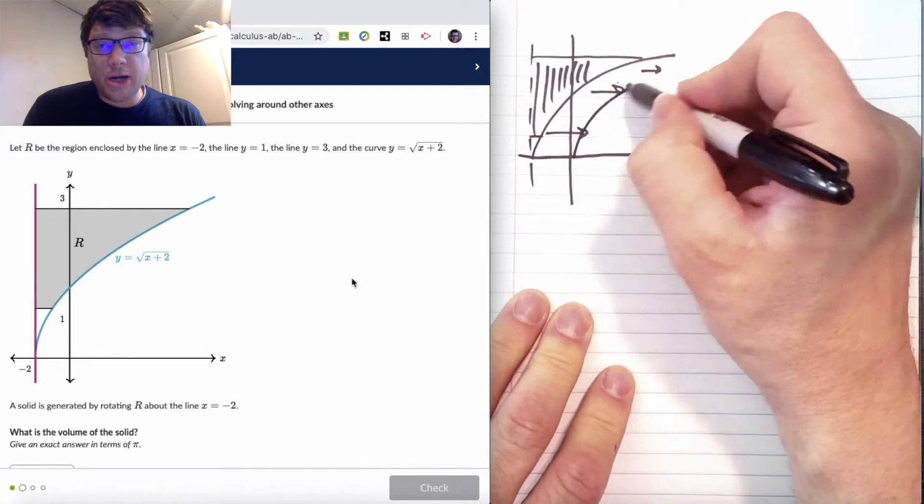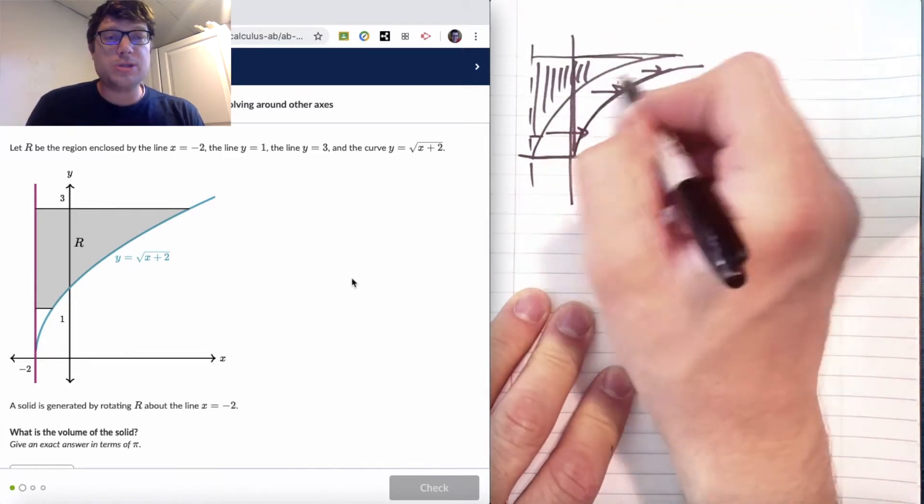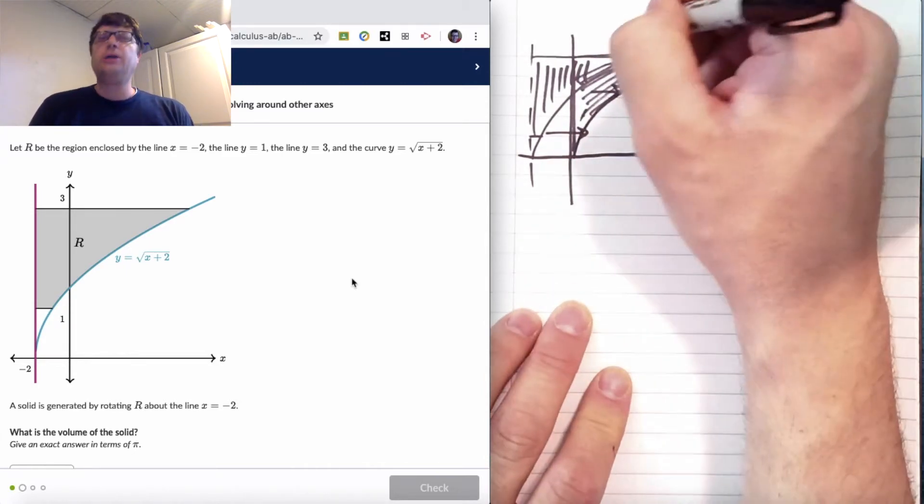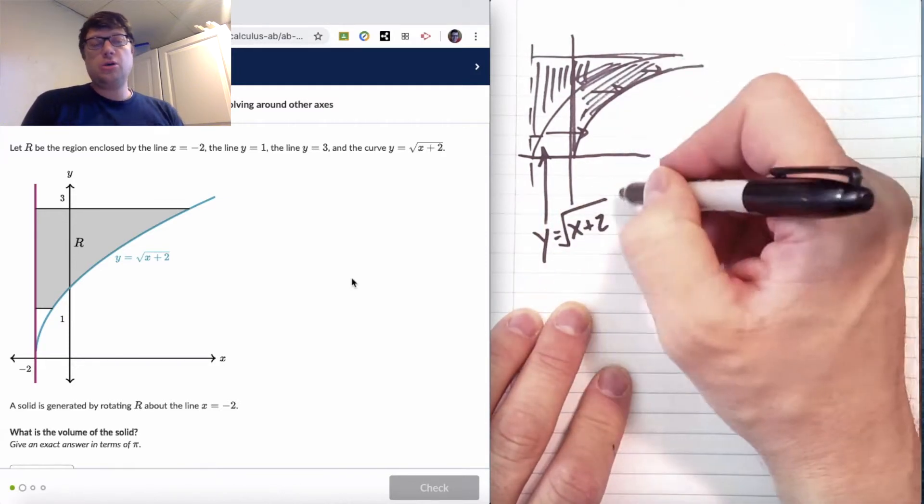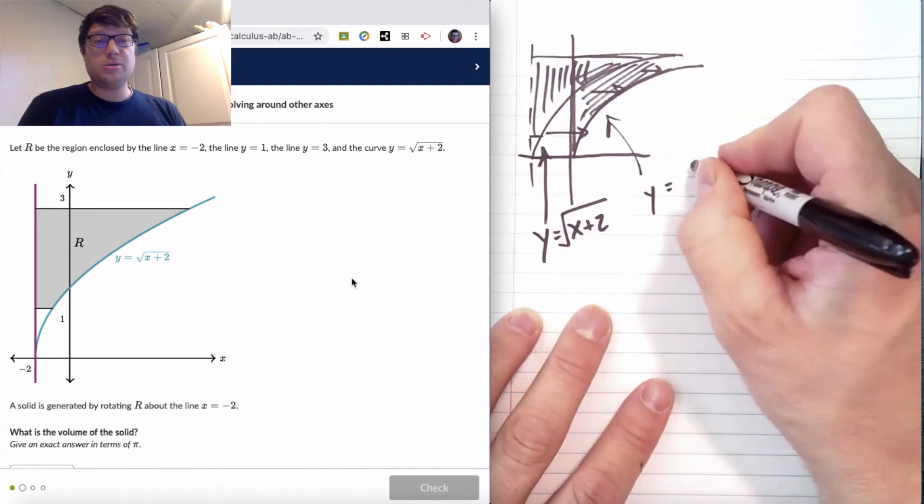So I'm drawing out the graph. The graph is Y equals the square root of X plus 2. And the key trick behind these questions is to shift the graph to an axis. So in this case, I need to shift it two spaces to the right.